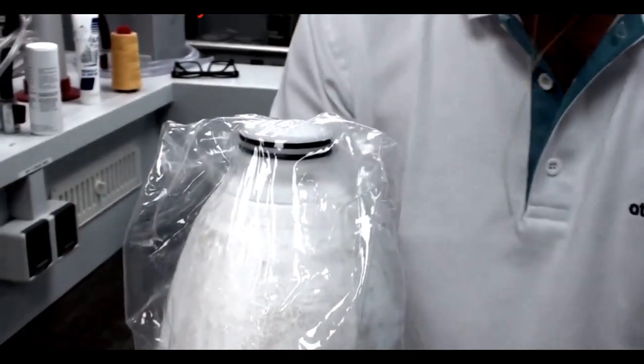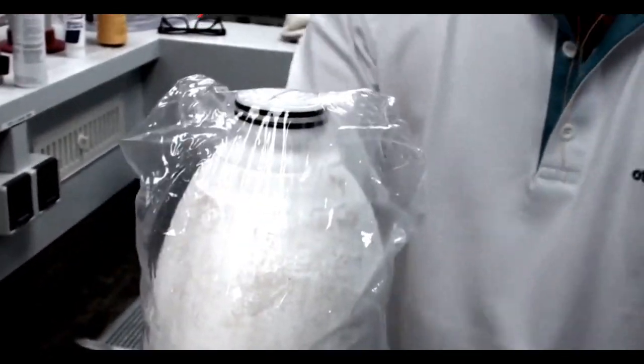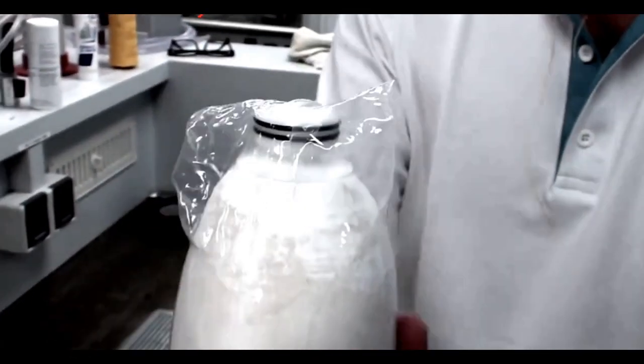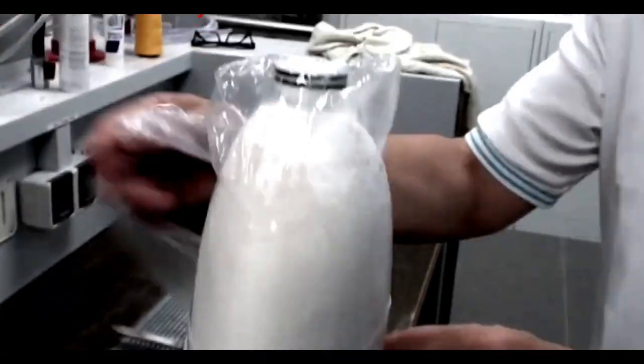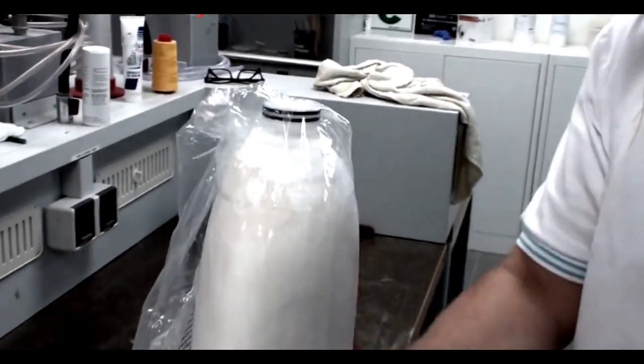At this point we're preparing the positive model for laminating the DVS socket. Prepare a lamination bag as you normally would and stretch it over the positive model.